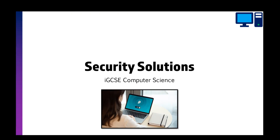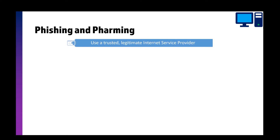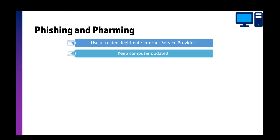In this video we're going to take a look at the various security solutions we can use in IGCSE computer science. First we're going to take a look at phishing and pharming. To avoid phishing and pharming there are some things we can do automatically with the computer and some things that come through with training.